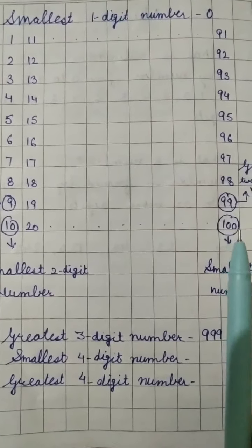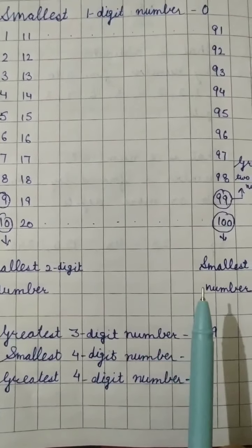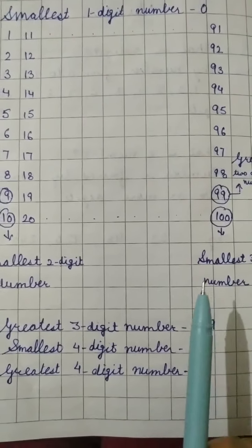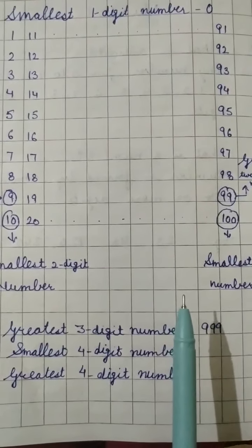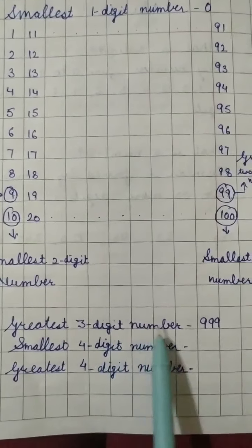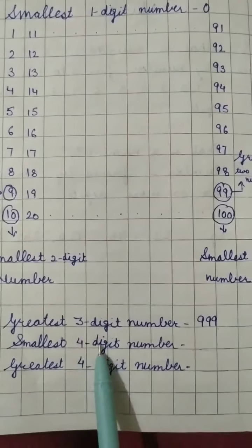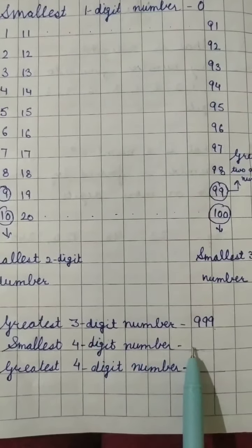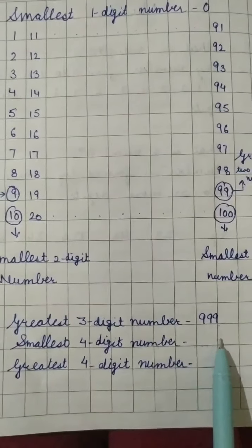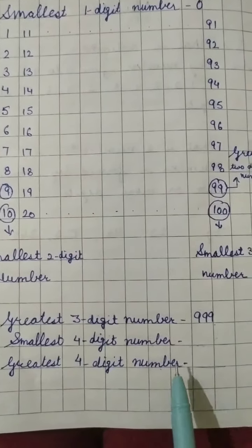So always remember whenever they are asking you about the smallest number you have to use 1 and 0 and when they ask greatest number you have to use 9. Now see greatest three digit number is 999. Now this is your homework you have to write down smallest four digit number. I will give you a hint that it will comprise of 1 and 0's. The greatest four digit number will comprise of all 9's. So you have to write it down.